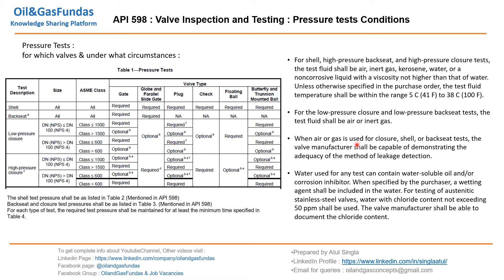When air or gas is used for closure, shell, or backseat tests, the valve manufacturer shall be capable of demonstrating the adequacy of the method of leakage detection. It is the manufacturer's responsibility to demonstrate that the leakage test is properly performed and that the valve is capable of withstanding the pressure.